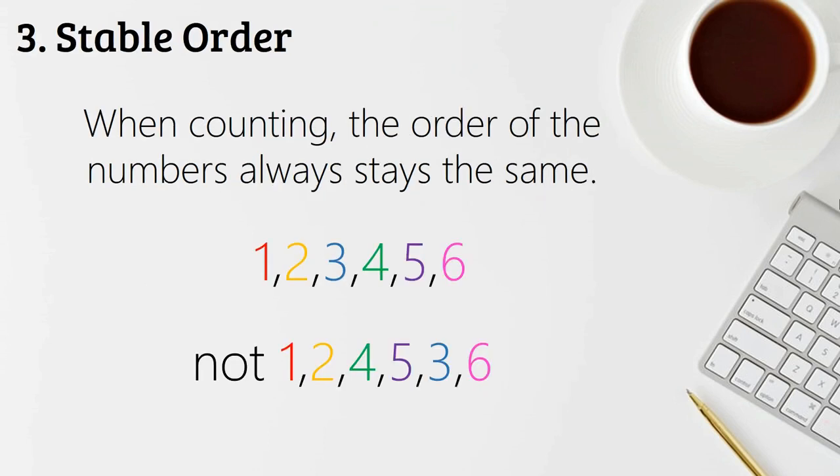So stable order. Stable order is really very simple. It's that when we're counting, numbers always stay the same. So one, two, three, four, five, six, and so on, as opposed to one, two, four, five, seven, and where children begin to mix up the numbers.